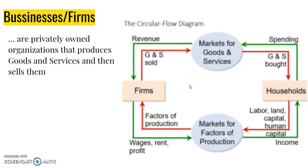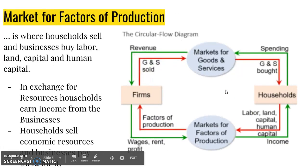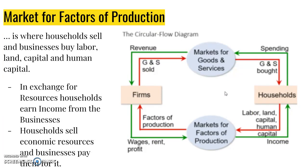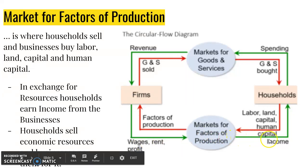It is important that we understand that households and businesses interact in markets. The first market we will study is the market for factors of production, where households sell and businesses buy labor, land, capital, and human capital. Households sell these resources, which become the factors of production for firms, and wages, rent, and profit are given back to households as income.